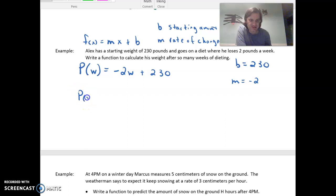Another way of writing this would be 230 starting weight minus 2 pounds every week. So 2 times w, or 2 times the number of weeks, would give us a total that we're subtracting off there.